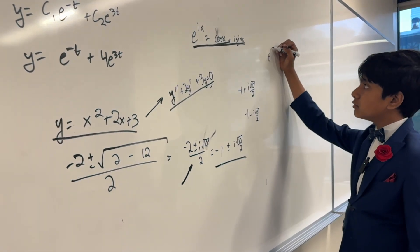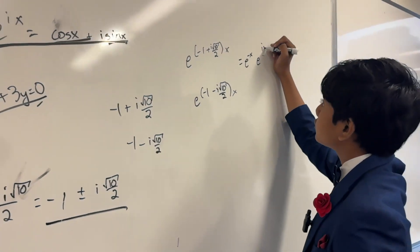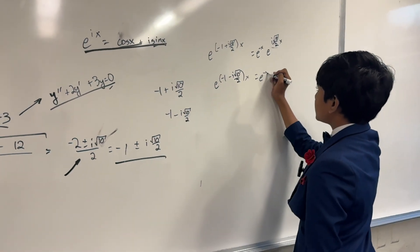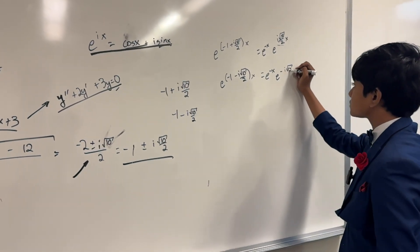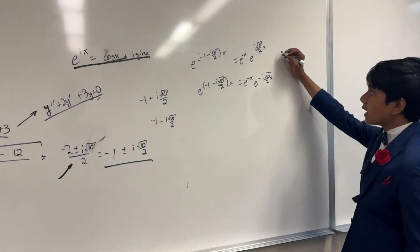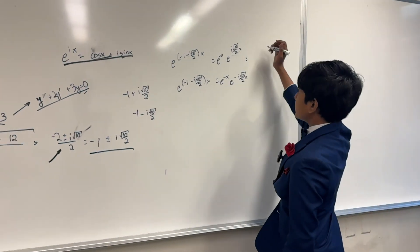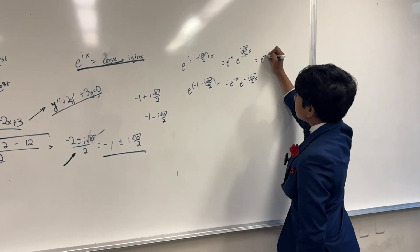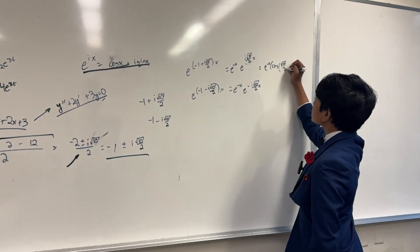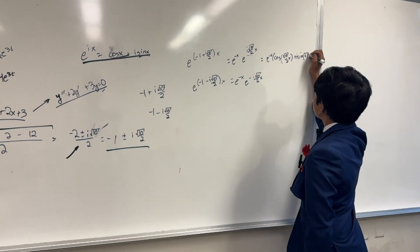So here now, you have that the solution is e to the minus x times e to the i root 10 over 2 x, and the same thing but negative over here. So then, all we have to do is spread it out in its proper form. So we get that this is just going to be equal to e to the minus x times cosine root 10 over 2 x plus i sine root 10 over 2 x.